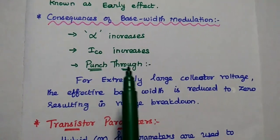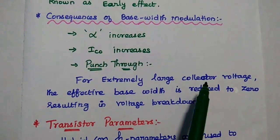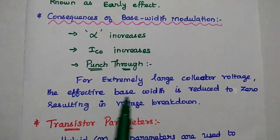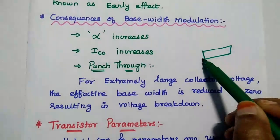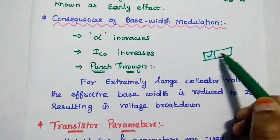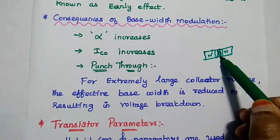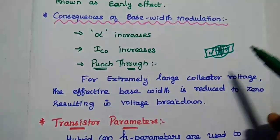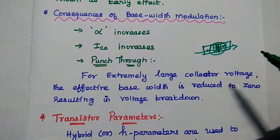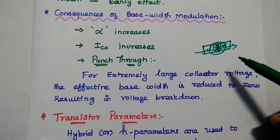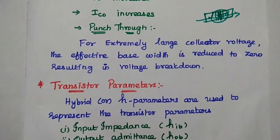Punch-through is a very important consequence of base width modulation. For an extremely large collector voltage, the effective base width is reduced to zero. If the base width reduces to zero, there is no base region — the junction breaks down and voltage breakdown occurs in the transistor. That is the drawback of base width modulation.